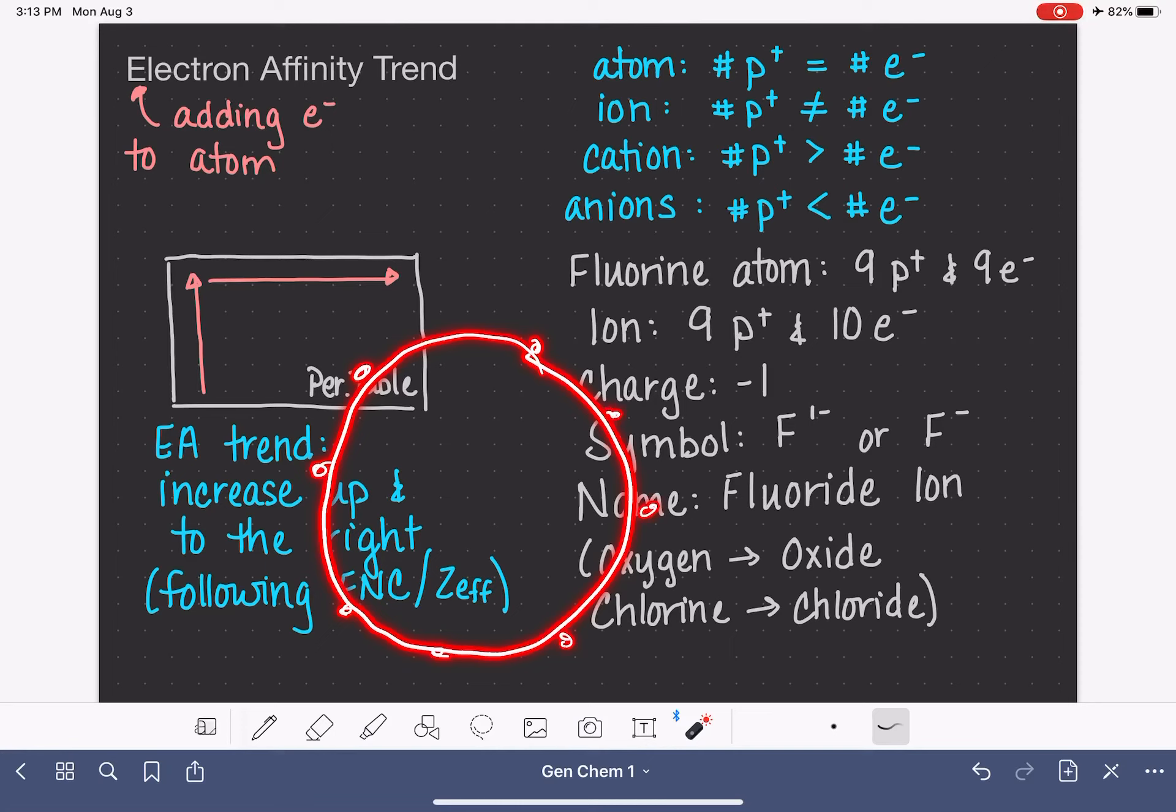So other electrons that might be kind of in the vicinity, they're going to be drawn into this situation because this nucleus is really attractive to the outer electrons. So when you have a high effective nuclear charge, you've basically got big pull to draw in random extra electrons that might be floating around.